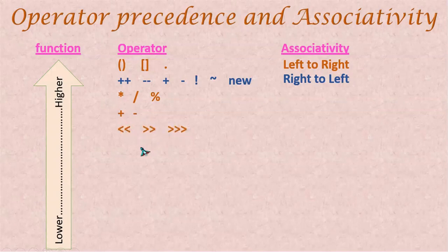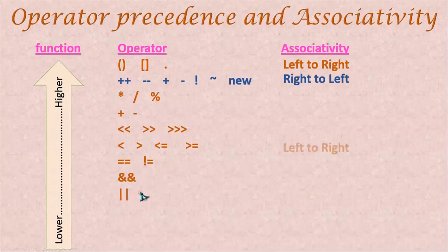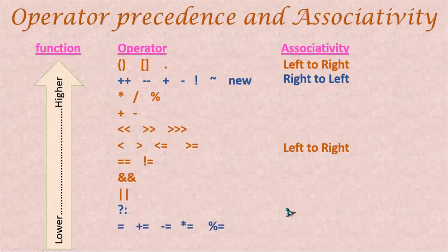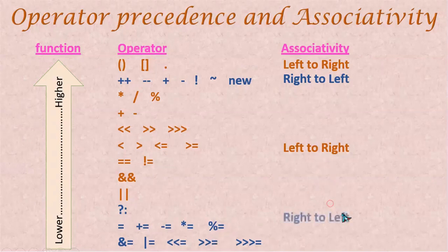Next come the bitwise operators, then the relational operators: less than, greater than, less than or equal to, greater than or equal to. After that we have the equality operators: equal to and not equal to. Then the logical operators: AND and OR — all of these are evaluated left to right when they share the same precedence. The ternary operator and the assignment operator are evaluated right to left. Compound assignment operators such as addition-assignment, subtraction-assignment, multiplication-assignment, modulus-assignment, AND-equal, OR-equal, and bitwise-equal are also all evaluated from right to left.